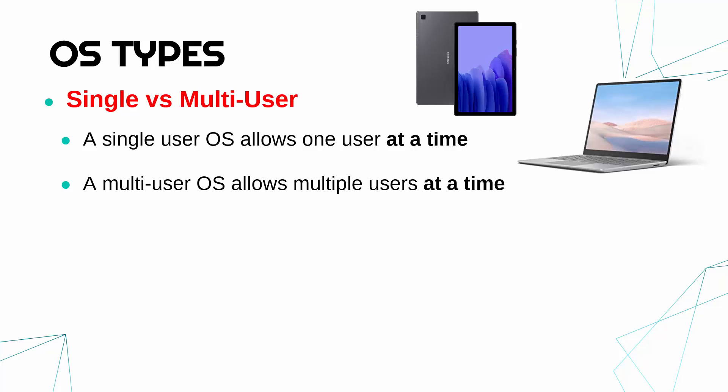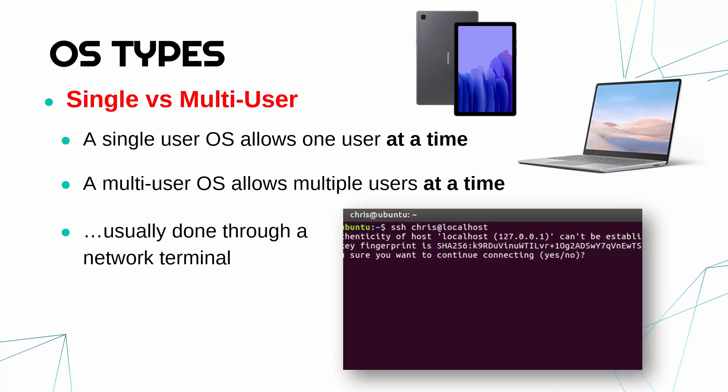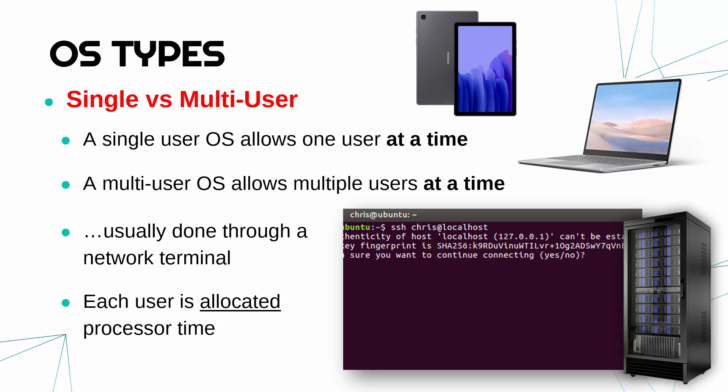There are operating systems which allow multiple users to use it at the same time — a multi-user operating system. Usually this is done via a network, maybe through a network terminal built into the OS which lets you connect to another computer, allowing multiple connections at once. A common example is a very powerful server — multiple people might connect to it to make use of its extra processing power. A multi-user OS is more complicated because it needs to allocate processor time to each user and also ensure that one user is not damaging another user's files.